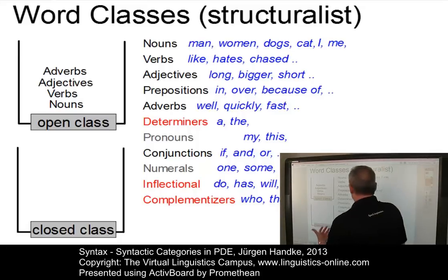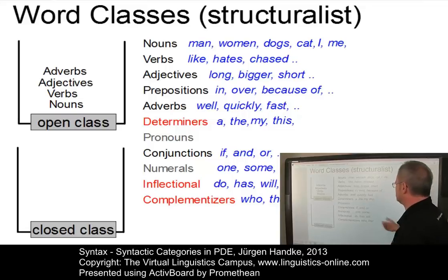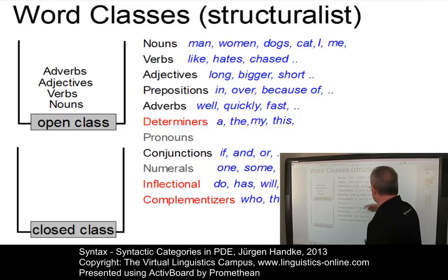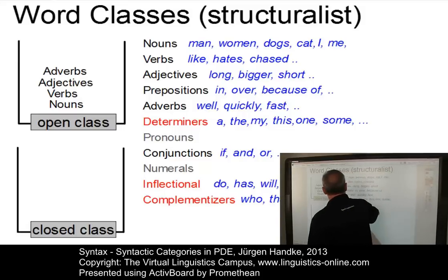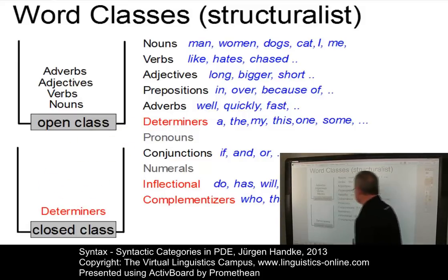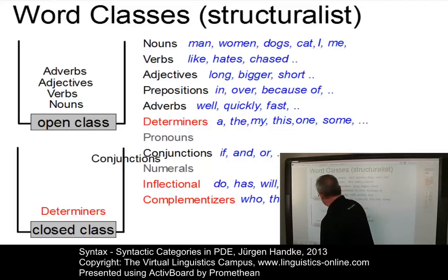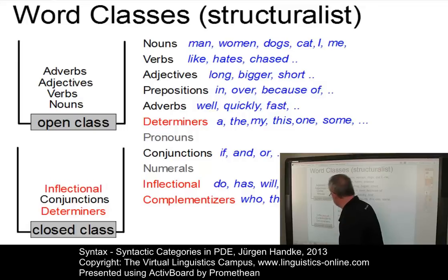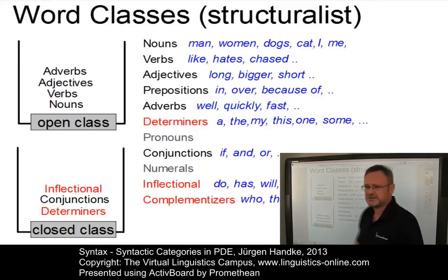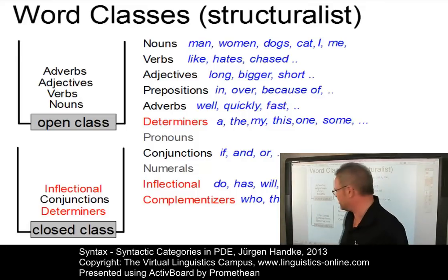And then we have a class now referred to as determiners, which subsumes all those elements that can precede nouns: a cat, the cat, my cat, this cat — and you could also have numerals, one cat, some cat. So, determiners are now a new class belonging to the closed class elements. Conjunctions are still similar. And there is a new class referred to as inflectional elements, which subsumes all those parts of a sentence responsible for the definition of the inflectional aspects of verbs.